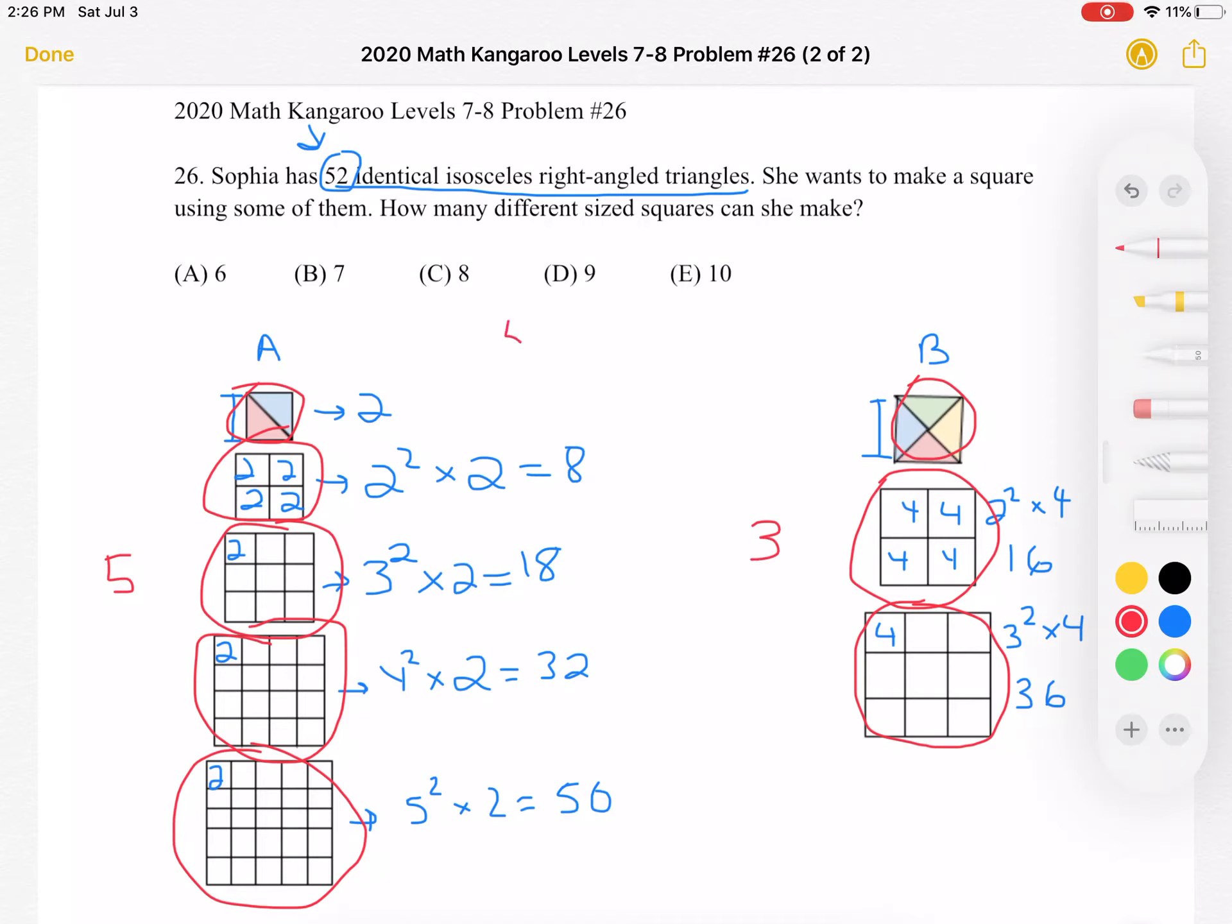So, now we have 5 from form A, 3 from form B, or a total of 8. And that is answer choice C. Thank you so much for watching, and please subscribe if you would like to see more videos.